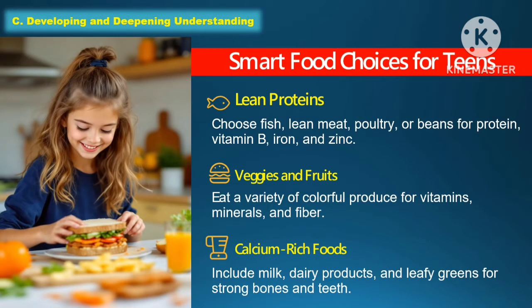The following are smart food choices for teens. The first one is lean proteins — choose fish, lean meat, poultry, or beans for protein, vitamin B, iron, and zinc. Another one is veggies and fruits — eat a variety of colorful produce for vitamins, minerals, and fiber. And the last one is calcium-rich foods — include milk, dairy products, and leafy greens for strong bones and teeth.